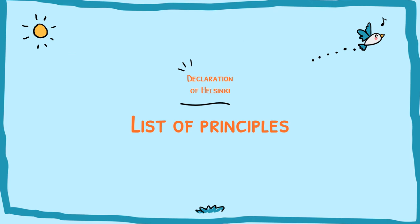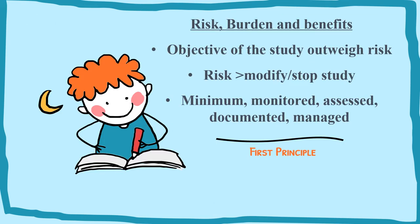The first principle listed in the Declaration of Helsinki is Risk, Burden, and Benefits. The objective is that the study should carry minimal risk. If the risk appears too high, it should be modified or changed. Risks must be minimized, monitored, assisted, documented, and managed. You cannot proceed with research that has no data to support it. If there is a risk, you must manage it.